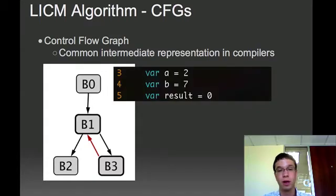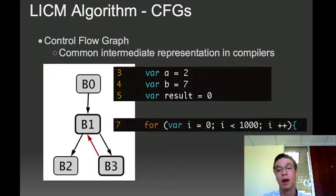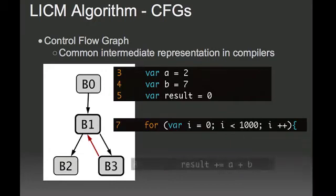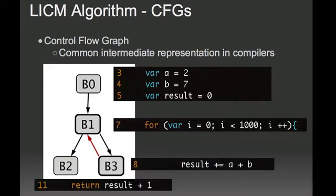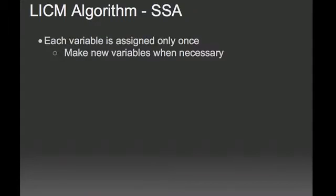This is the control flow graph for the function I just showed you. The first block represents the initialization of the variables. The B1 block is the header of the loop, the for statement. The B3 block is the body of the loop. And B2 represents the return statement.